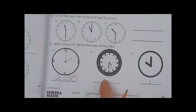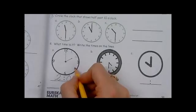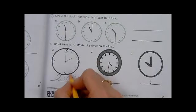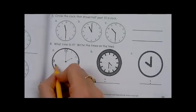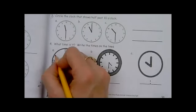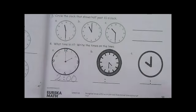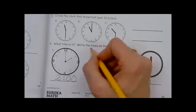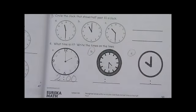So, I want you to complete B and C on your own. Remember class, we'd have a four and a five, a seven and eight, a 10 and 11, to help you visualize. Go ahead and pause the video and complete B and C on your own, writing the times on the lines.